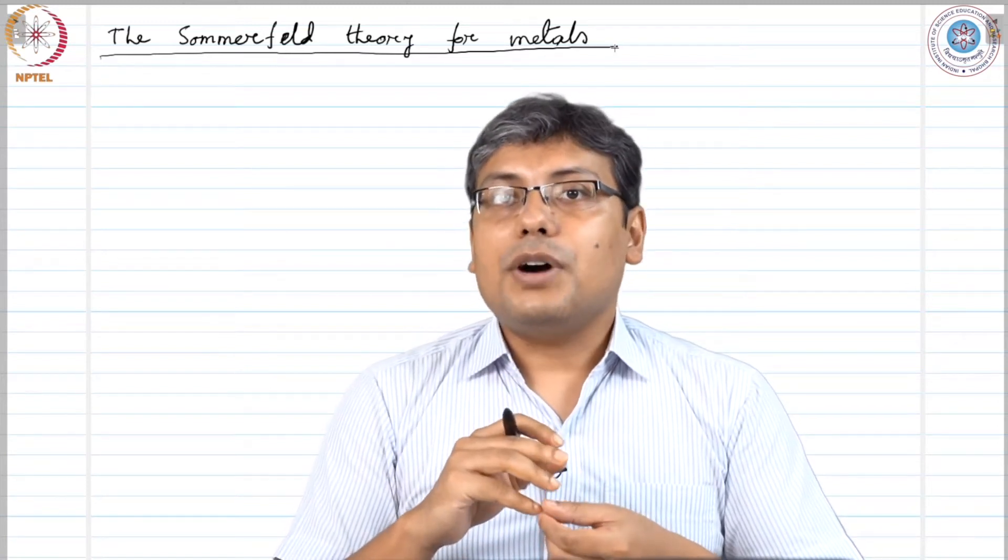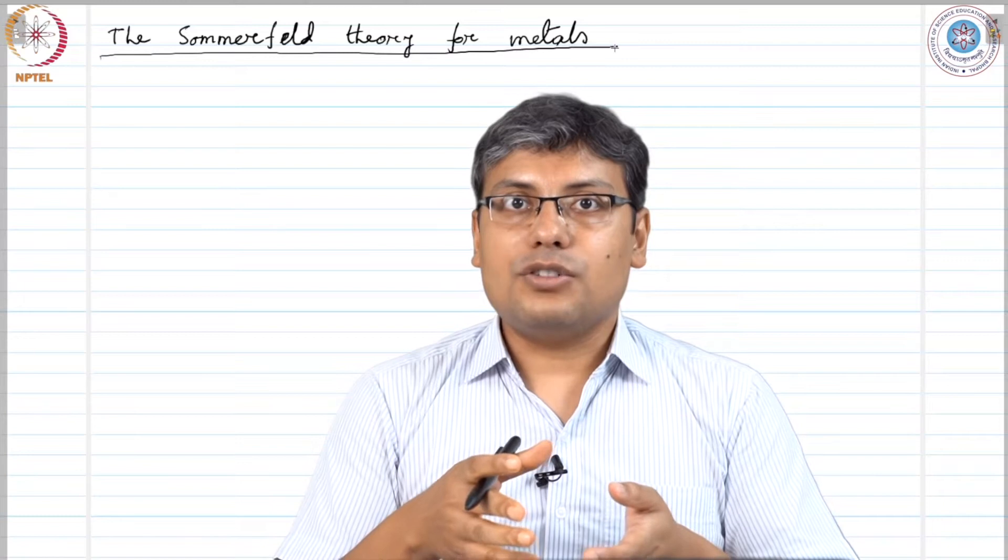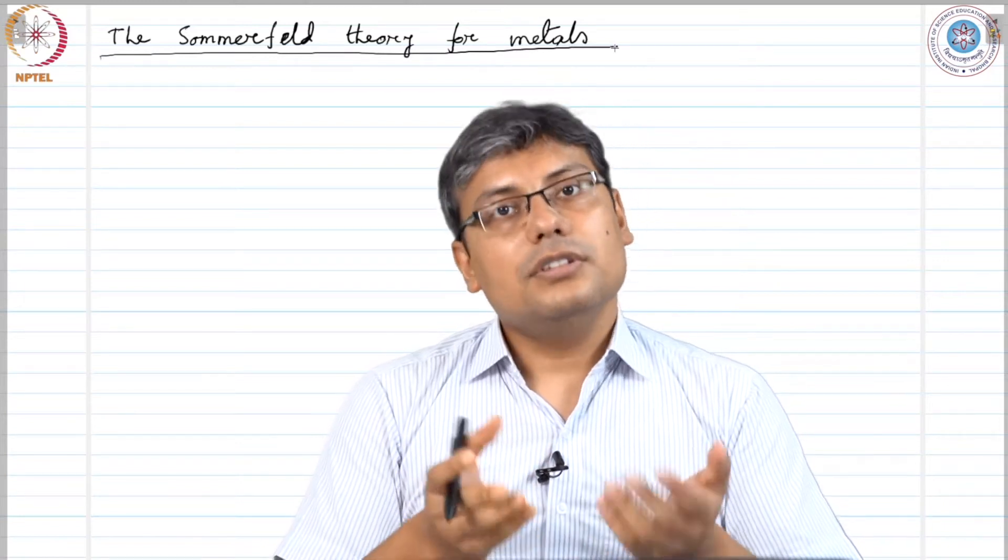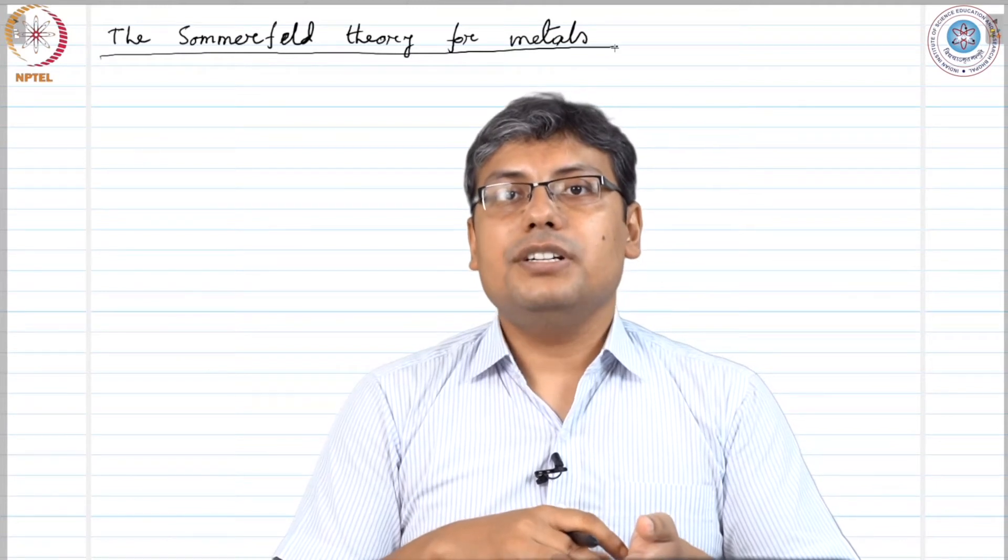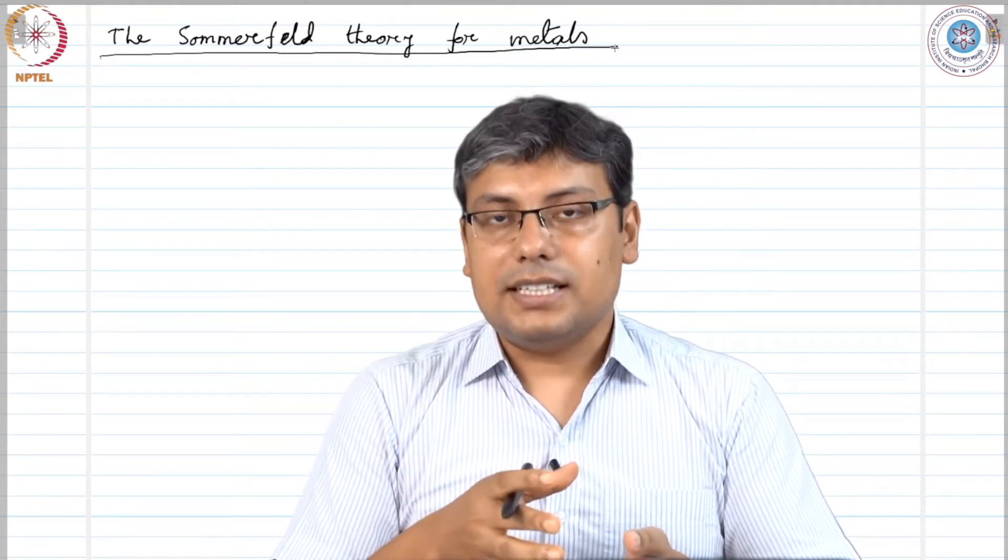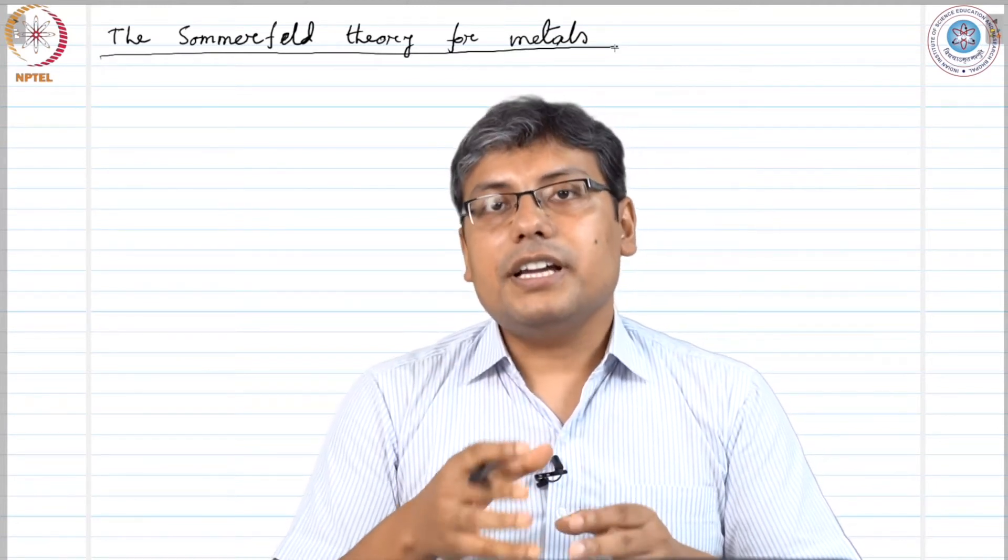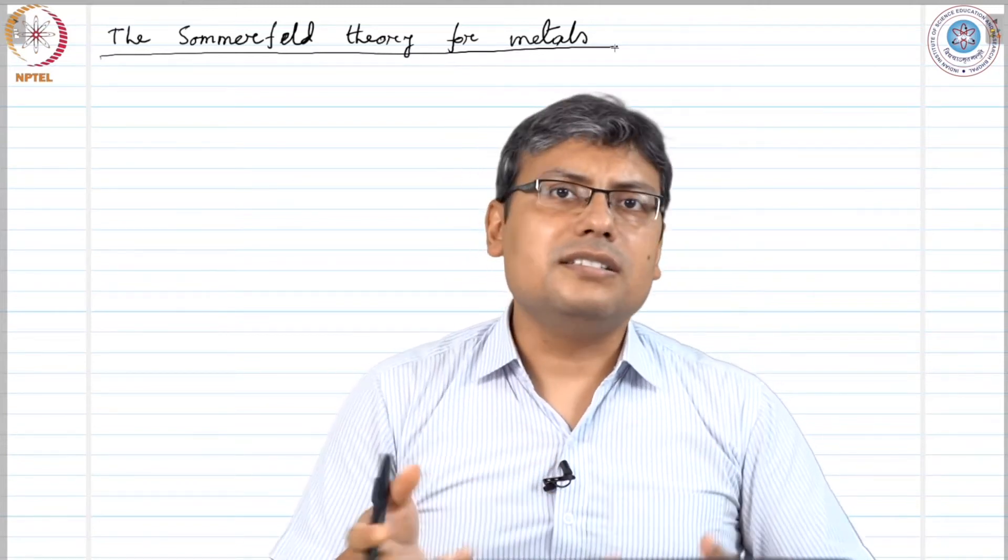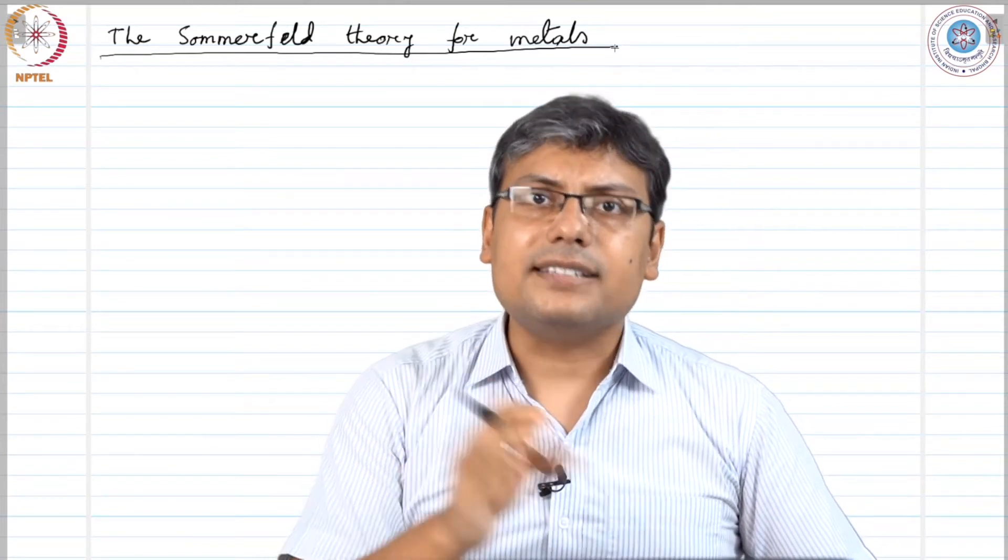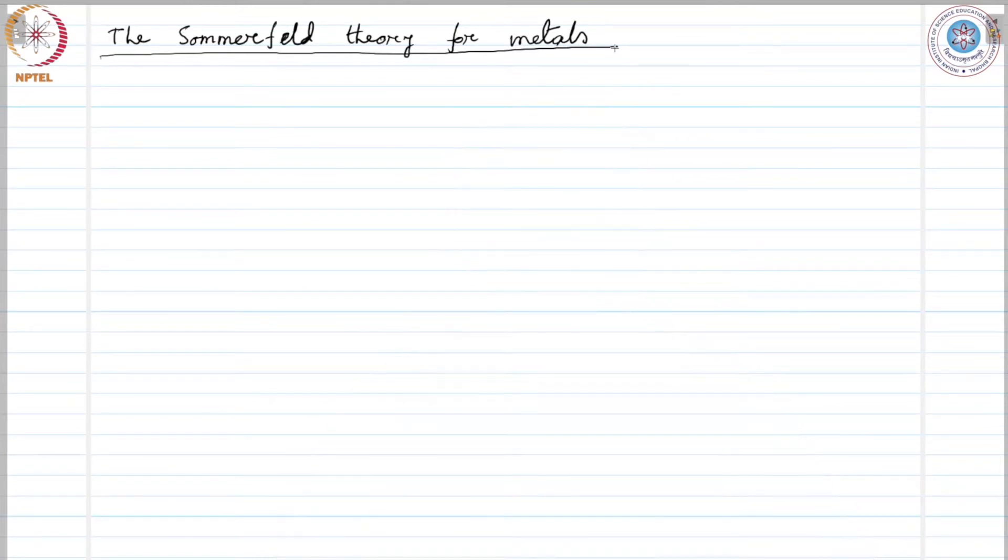Also, you have Pauli exclusion principle that is obeyed by every fermion and electrons are fermions. So, that principle is obeyed. So, you have to consider these things while treating electrons in a metal. Drude did not consider that because these theories did not exist at his time.